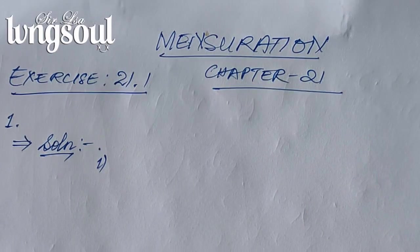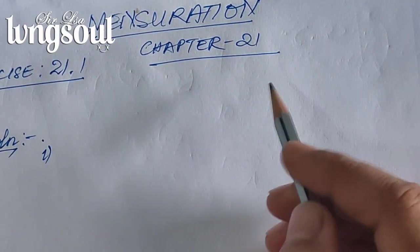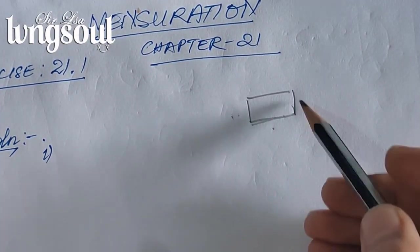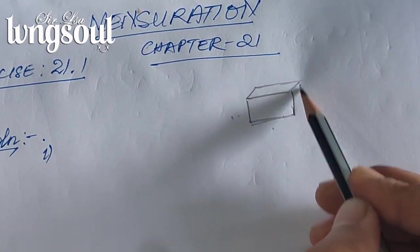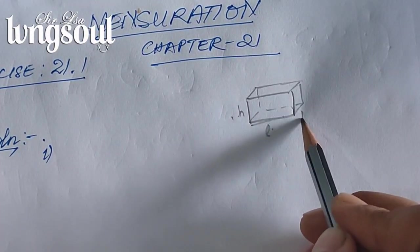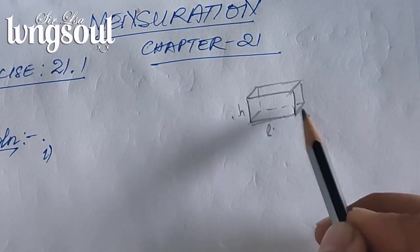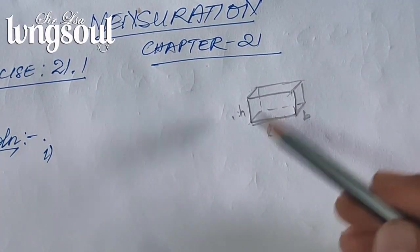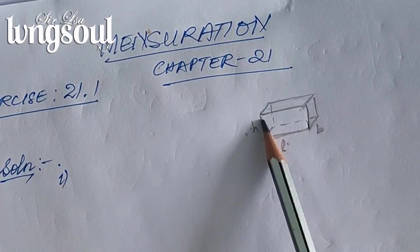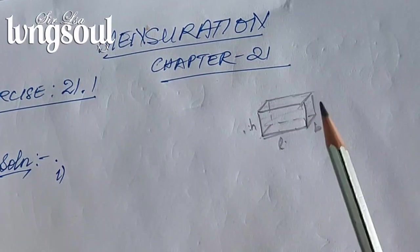A cuboid is a three-dimensional rectangle. It has three dimensions: length, breadth, and height. The total surface area covers the entire surface area of the rectangle. Here is the formula for total surface area.